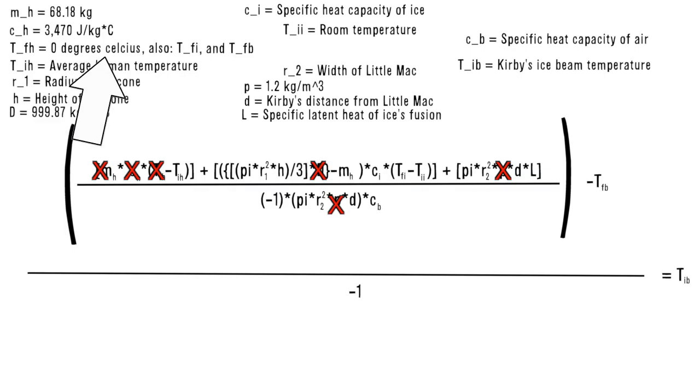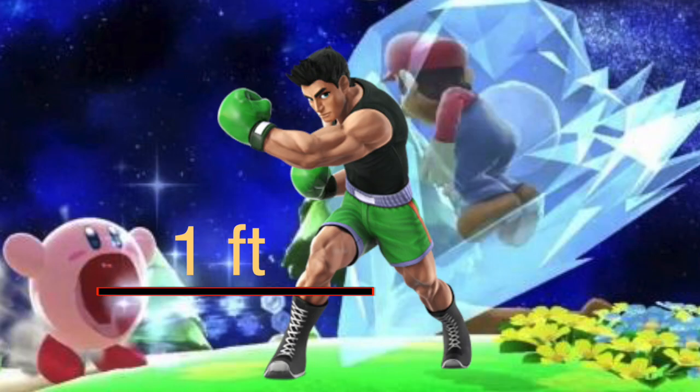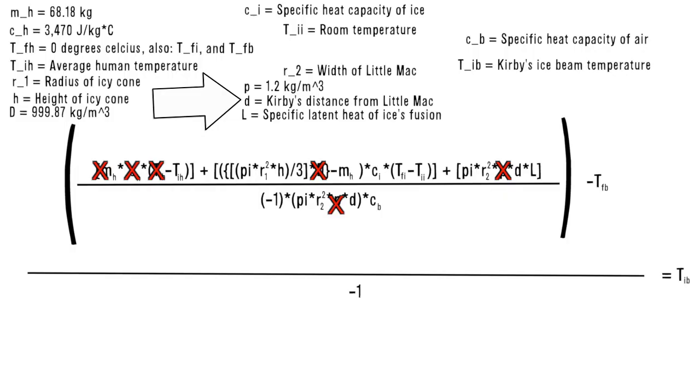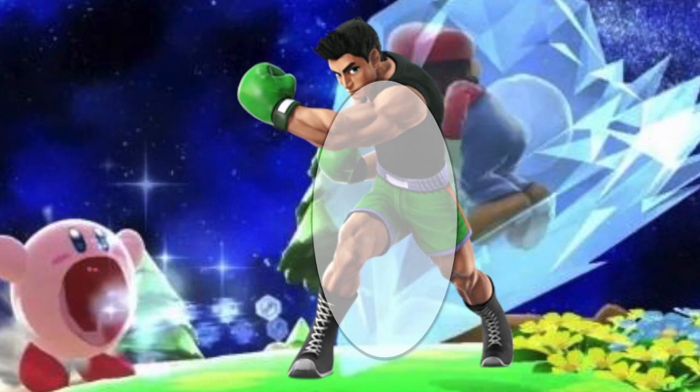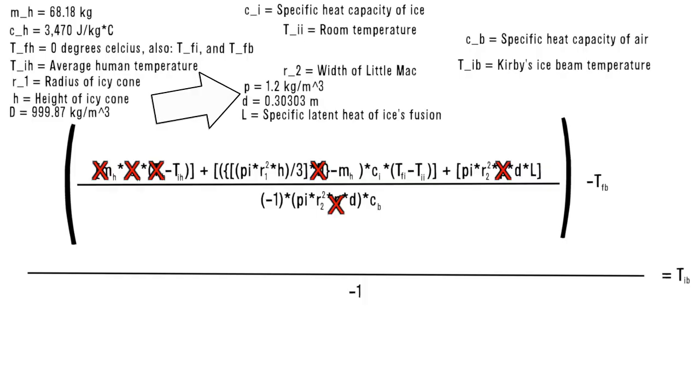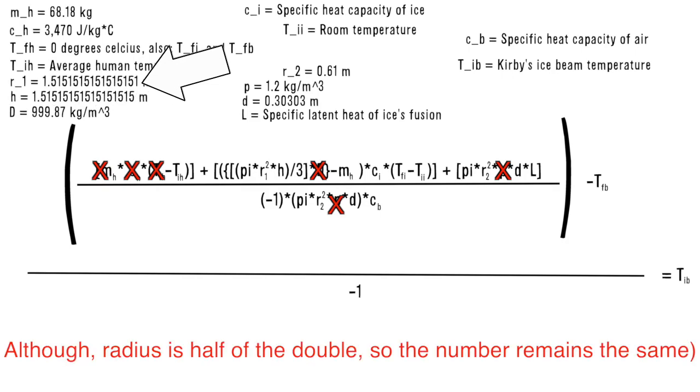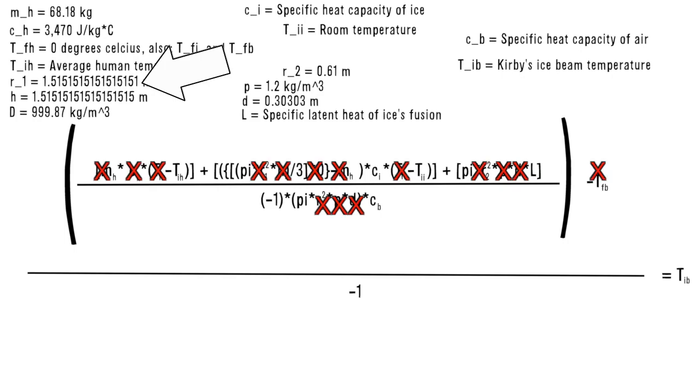During my calculations, Kirby was a foot away from Little Mac, so the lowercase d is around 0.30303 meters. Comparing some more, Kirby's icy breath affected about 4 feet of the 5 feet Little Mac. So I divided by 2 and converting to metric gives us radius 2 to be about 0.61 meters. The cone of the ice was Little Mac's height, and its width was double Little Mac's height. Now we have all of these filled in.